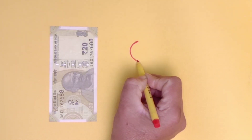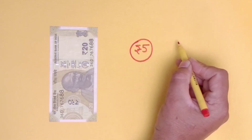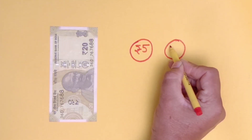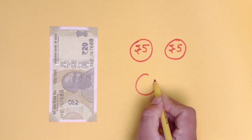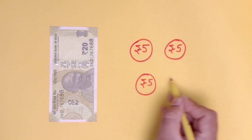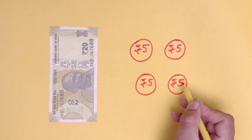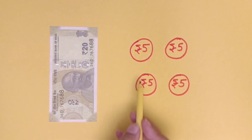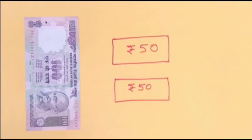Let's try to draw some notes and coins in place of rupees 20. We will draw 5 rupee coins. This is our first 5 rupee coin. Now we will draw 1 more coin of rupees 5, then 1 more coin of rupees 5, and 1 more coin of rupees 5 so that their value will be equal to rupees 20. This gives us 5 rupees, 10 rupees, 15 rupees, and 20 rupees.